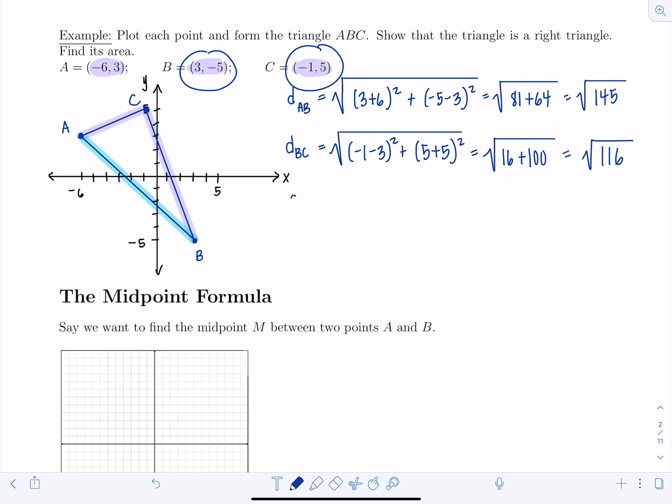Last one, the distance from A to C. So that's going to be square root. Now I'm just looking at points A and C. So I'll have -1 minus (-6), so plus 6, squared, plus 5 minus 3, squared. So this gives me the square root of -1 + 6, that's 5, square it, it's 25 + 4. So √29. Okay.